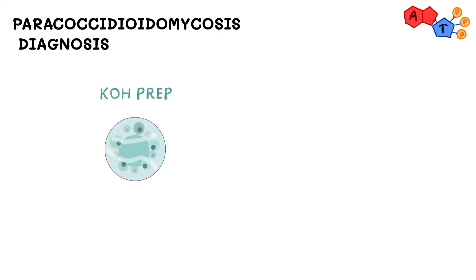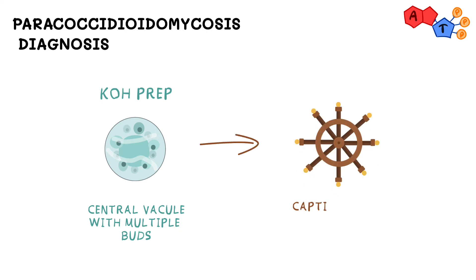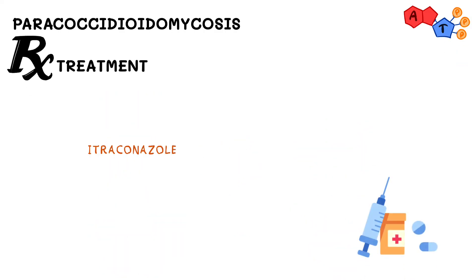Under potassium hydroxide prep, the yeast form of paracoccidioides looks like a central vacuole with multiple buds radiating out, giving a captain's wheel appearance. Think of a pirate navigating his captain's wheel through South America on a hot sunny day. Treatment is itraconazole for mild infection and amphotericin B for systemic infection.